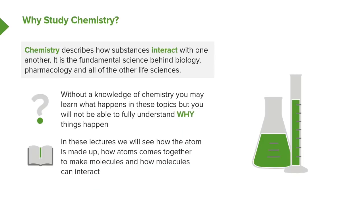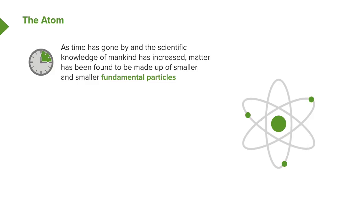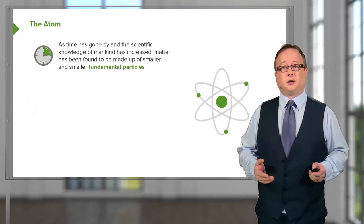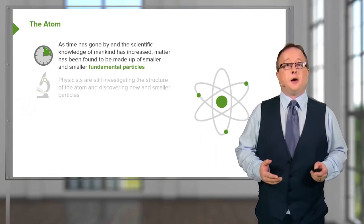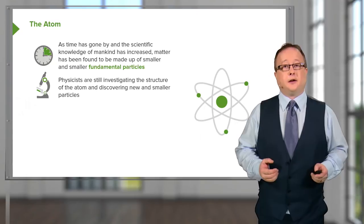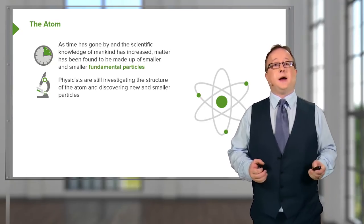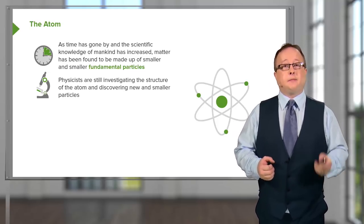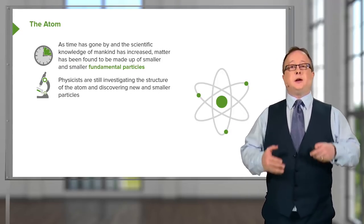In these lectures, which form part of the course as a whole, we will see how an atom is made up, how atoms come together, and how they interact with each other. As time has gone by within the last 100 to 150 years, the scientific knowledge of mankind has increased and matter has been found to be made up of smaller fundamental particles. In particular, subatomic particles such as protons, neutrons, and electrons themselves are actually made up of even smaller particles falling into the quark and lepton class.